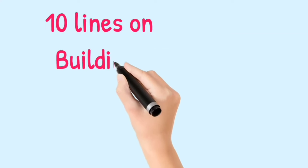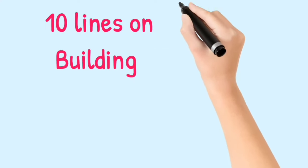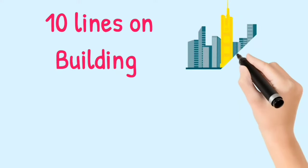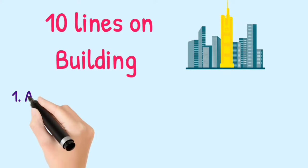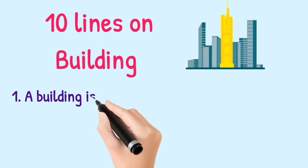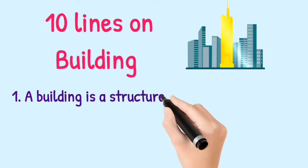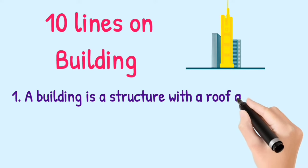10 Lines on Buildings. 1. A building is a structure with a roof and walls.